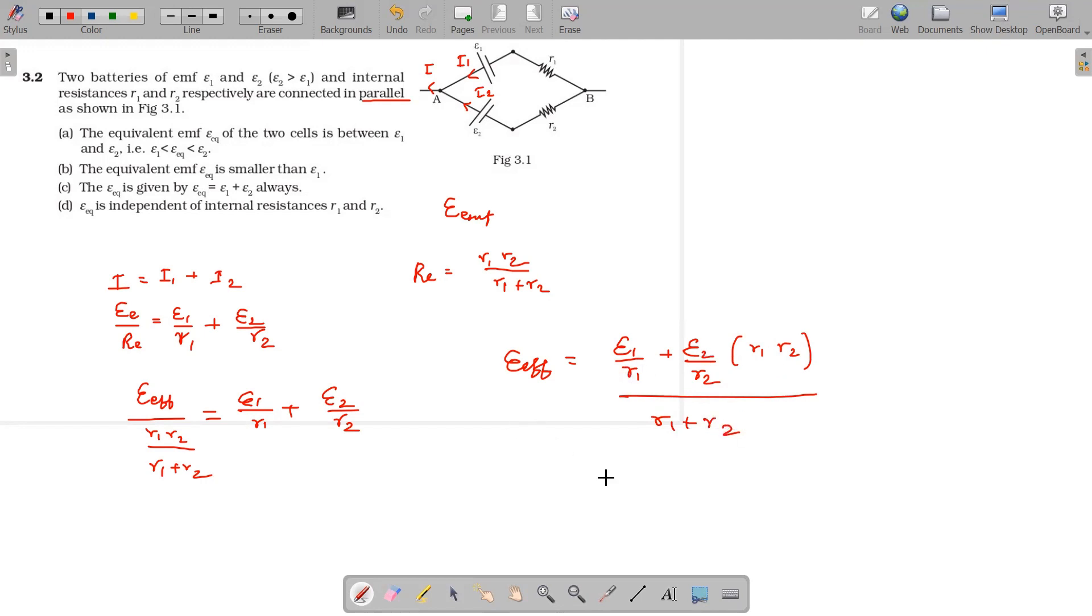When it goes to the numerator, we will take this term. r1 into r1 by r1 plus r2. When you multiply inside, e1*r2 (r1 cancels) plus e2*r1 by r1 plus r2. Clear formula.